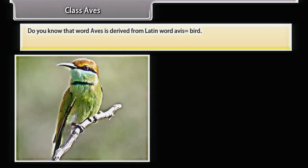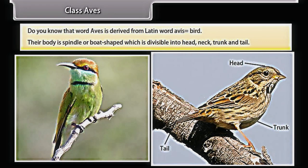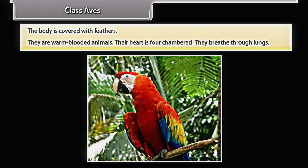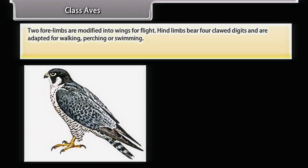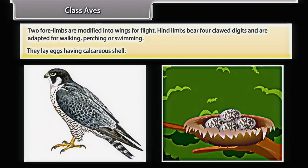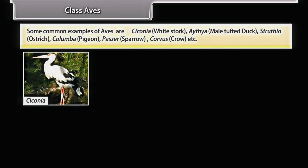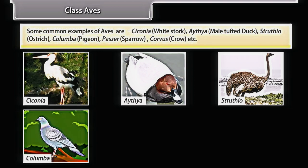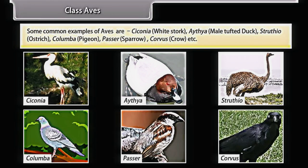Aves is derived from Latin word 'avis', meaning bird. Their body is spindle- or boat-shaped, divisible into head, neck, trunk, and tail. The body is covered with feathers. They are warm-blooded with a four-chambered heart and breathe through lungs. Two forelimbs are modified into wings for flight. Hindlimbs bear four clawed digits adapted for walking, perching, or swimming. They lay eggs with a calcareous shell. Common examples are Ciconia (white stork), Aythya (tufted duck), Struthio (ostrich), Columba (pigeon), Passer (sparrow), and Corvus (crow).